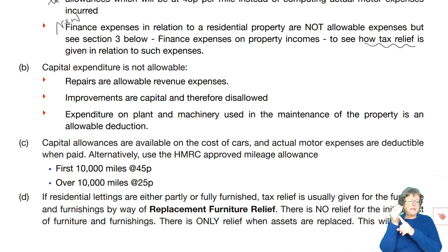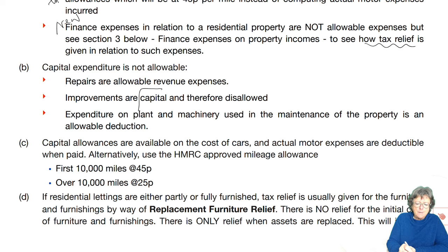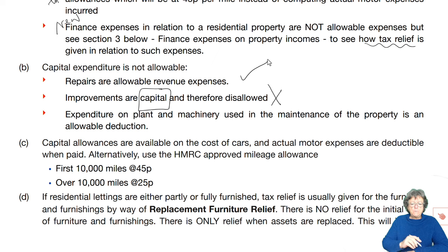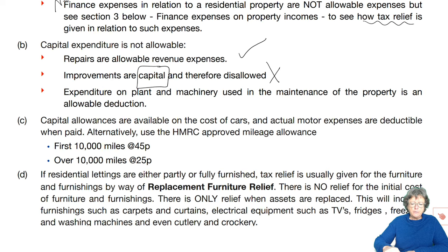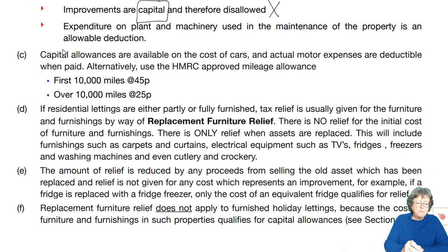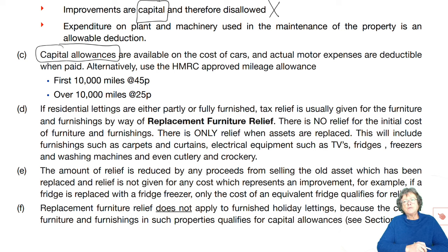Repairs are allowed. Improvements are normally classed as capital in nature and therefore you can't deduct them. You can have expenditure on property plant and machinery for the property. For cars, you can have capital allowances — that's basically an allowance for the depreciation of a vehicle or asset. We'll come across that when we do self-employed and it will make more sense when you come back and read this again.